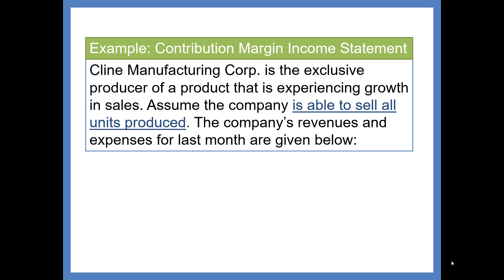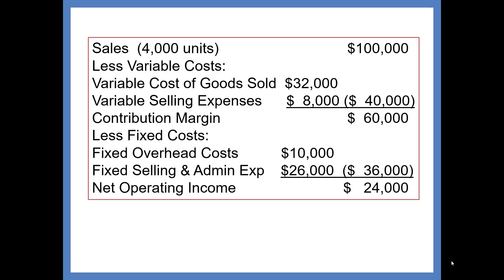Let's work an example. Klein Manufacturing Corporation is the exclusive producer of a product experiencing growth in sales. Assuming all units produced are sold, last month's data shows: Sales of 4,000 units totaling $100,000; Variable Costs of $40,000 (Cost of Goods Sold and Selling Expenses); Contribution Margin of $60,000; Fixed Overhead of $10,000; Fixed Selling and Administrative of $26,000; Total Fixed Cost of $36,000; and Net Operating Income of $24,000.